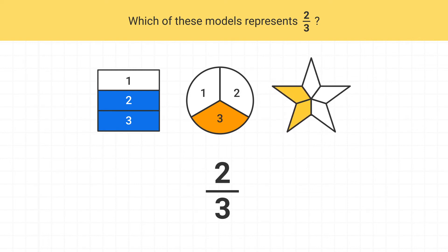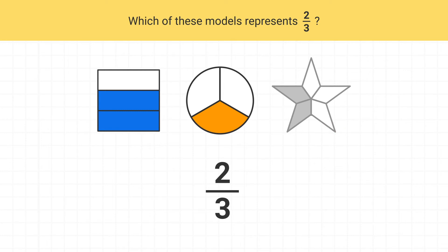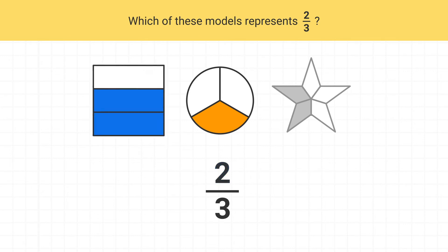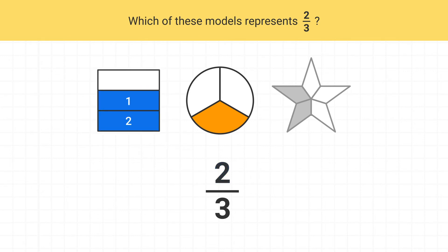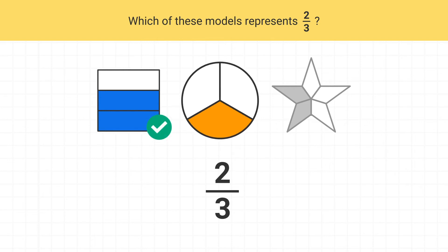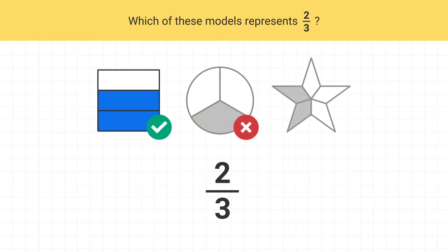However, this last model has 1, 2, 3, 4, 5 total pieces, so it can't be this last model. The next thing we can look at is the numerator, which is 2. A numerator of 2 means we have 2 pieces shaded. We can see this first model has 2 shaded pieces, so this model is correct. But the circle only has 1 shaded piece, so it can't be correct. That means this is the only model that shows 2 thirds.